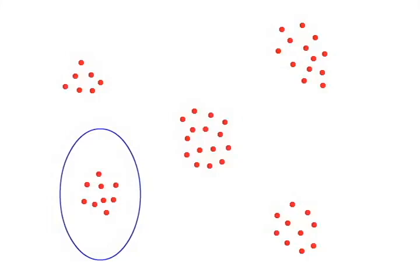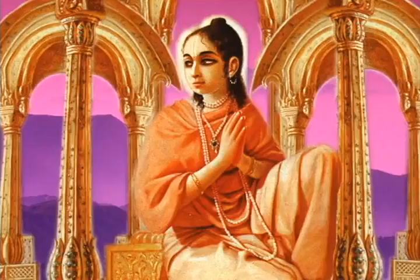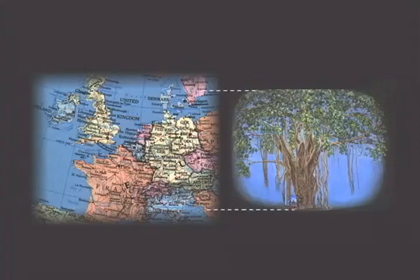The first point is that the demigods are portrayed as being so large that we are literally like ants in comparison with them. For example, this picture shows the size of Lord Shiva in relation to Europe, based on dimensions given in the Bhagavatam.